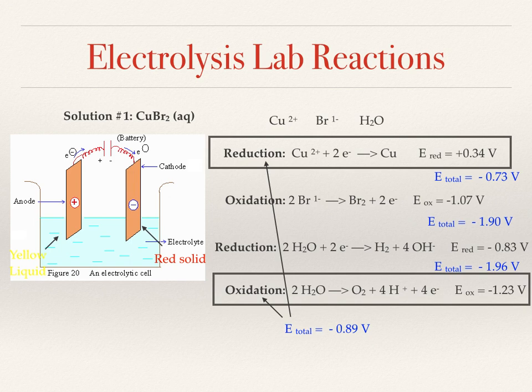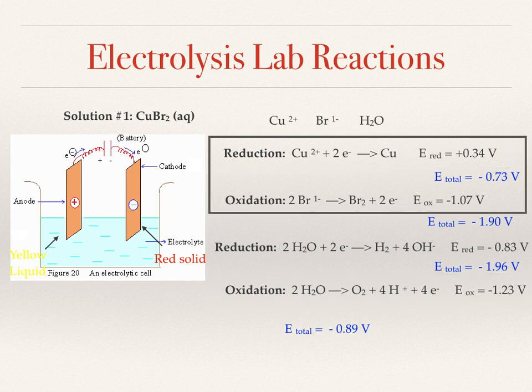So who wins? It's going to be the least negative of them and that's going to be the reduction of your copper ions and your oxidation of your bromide ions. That's going to be the smallest amount of energy that the battery needs to impart to make this reaction happen.